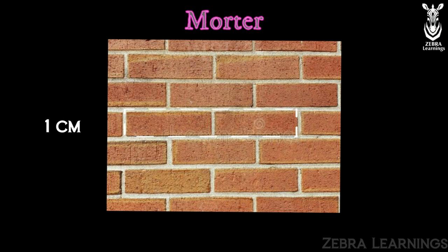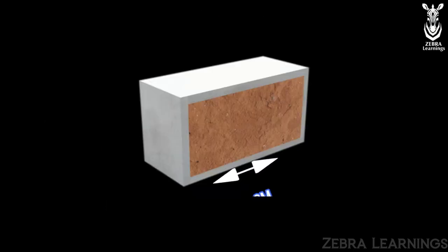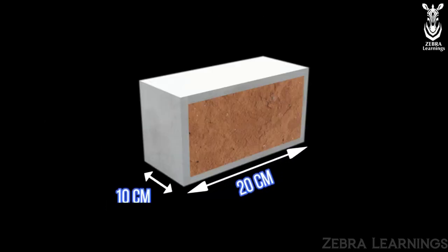So the size of brick with mortar is 20 cm long, 10 cm wide, and 10 cm high. Now let us see the formula to find the number of bricks.